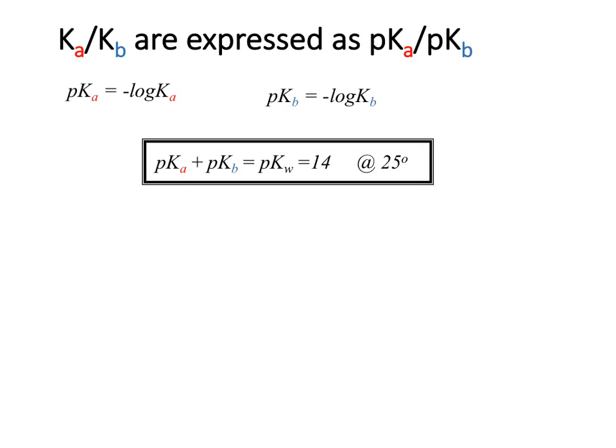Ka and Kb represent the ionization process of acids and bases in solution. pKa and pKb do the same, however they give us numbers that are usually more manageable. They're usually not as small, so that's something we can more intrinsically understand.